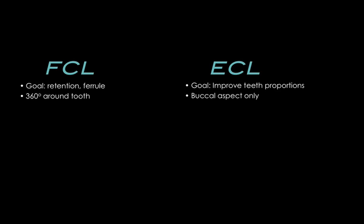Another difference is that functional crown lengthening is performed all around the tooth — 360 degrees — and that involves reflecting a buccal flap and a lingual or palatal flap. With aesthetic crown lengthening, we are only working on the buccal aspect of the teeth, so we are involving only a buccal flap. In functional crown lengthening, we do not preserve the papilla. Most of the time those cracks, fractures, and secondary caries occur interproximately, and that's the area where we will resect bone and soft tissue.